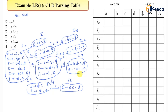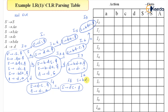Two states are left. On input small c from i6, this will be S-derived B A small C dot followed by dollar — state i9. Finally, on input A from i7, it will become S-derived B D A dot followed by dollar — state i10.